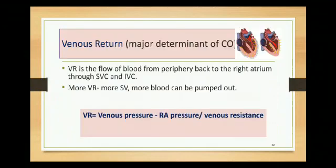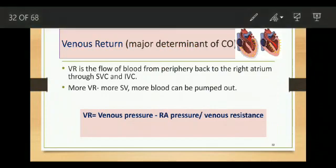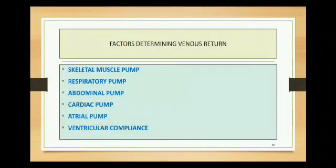Coming to one of the major determinants of cardiac output: heart rate and stroke volume, where stroke volume depends on venous return - the intrinsic regulation. Venous return is the flow of blood from the periphery through the superior vena cava from the upper body and through the inferior vena cava from the lower body to the right atrium. More venous return means more stroke volume. Venous return equals venous pressure minus right atrial pressure, divided by venous resistance. Factors determining venous return include: skeletal muscle pump, respiratory pump, abdominal pump, cardiac pump, atrial pump, and ventricular compliance.